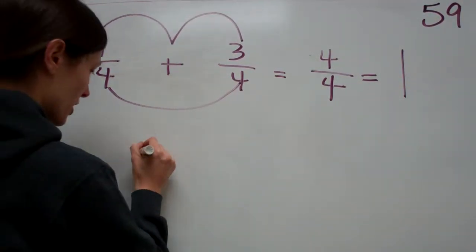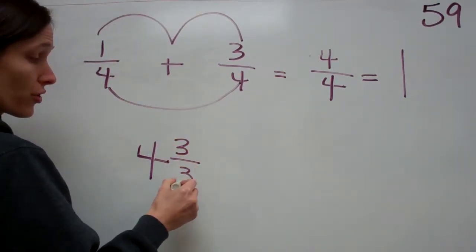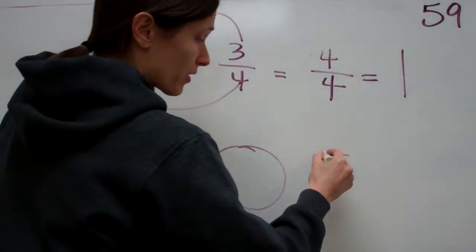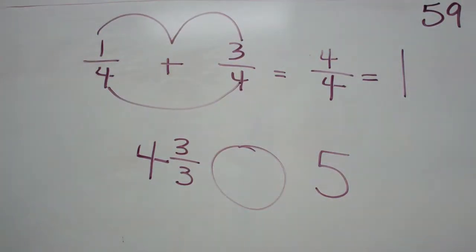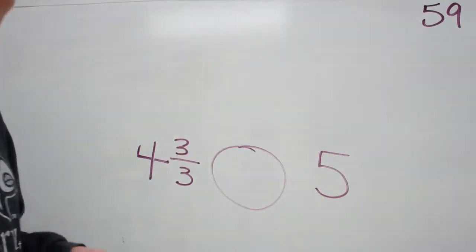Now let's try something else. Now they're wanting us to compare four and three-thirds, they're wanting us to compare that with five whole pies. Does anybody see something in this? Yes, Garrett? That they're both equal? They are both equal.